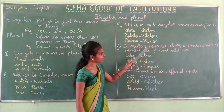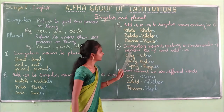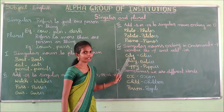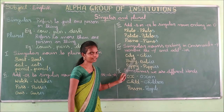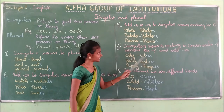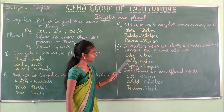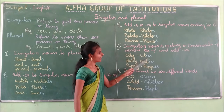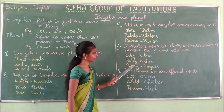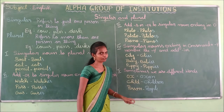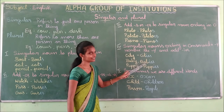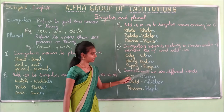Fourth rule: singular nouns ending in consonant plus Y — remove the Y and add IES. Example: city→cities, baby→babies, puppy→puppies. Repeat: city, cities, baby, babies, puppy, puppies.